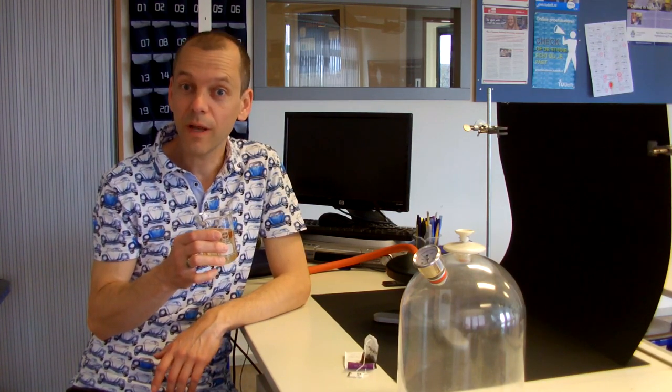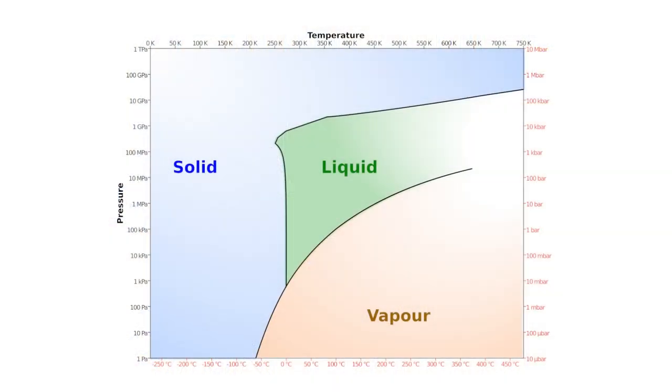This diagram shows you the phases of water. On the horizontal axis you can see the temperature and on the vertical axis the pressure. In this region water is a liquid, in this region water is a vapor or gas, and in this region water is ice, a solid.